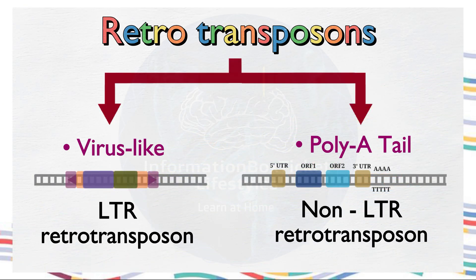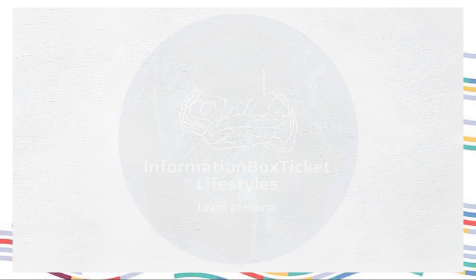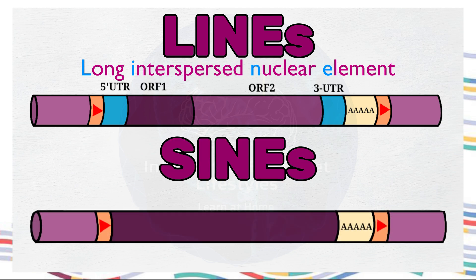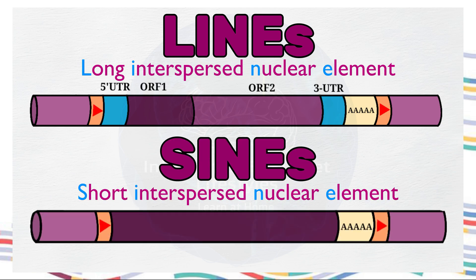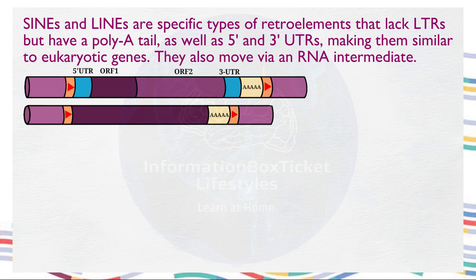Apart from retroviral or LTR-retrotransposons, there are non-LTR-retrotransposons. When we discuss non-LTR-retrotransposons, LINEs (long interspersed nuclear elements) and SINEs (short interspersed nuclear elements) come to mind. SINEs and LINEs are specific types of retroelements that lack LTRs but have a poly-A tail, as well as 5' and 3' UTRs, making them similar to eukaryotic genes. They also move via an RNA intermediate.